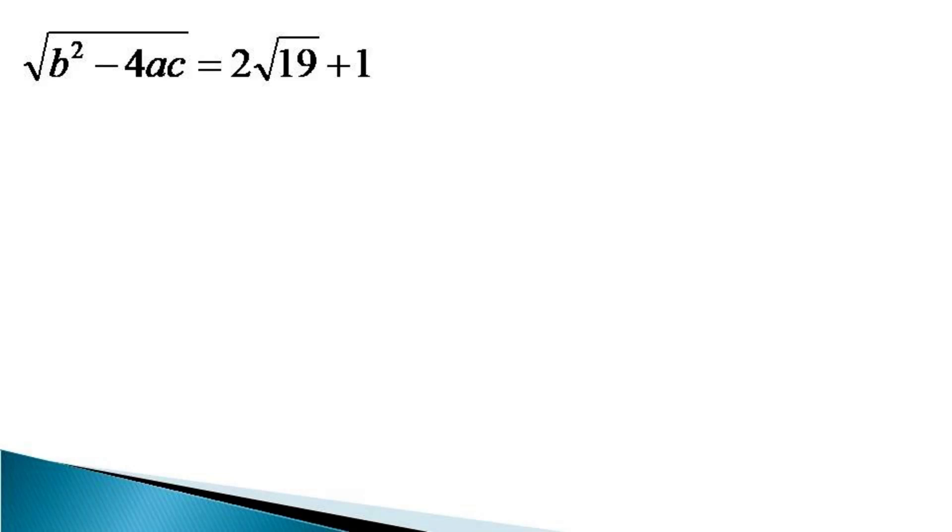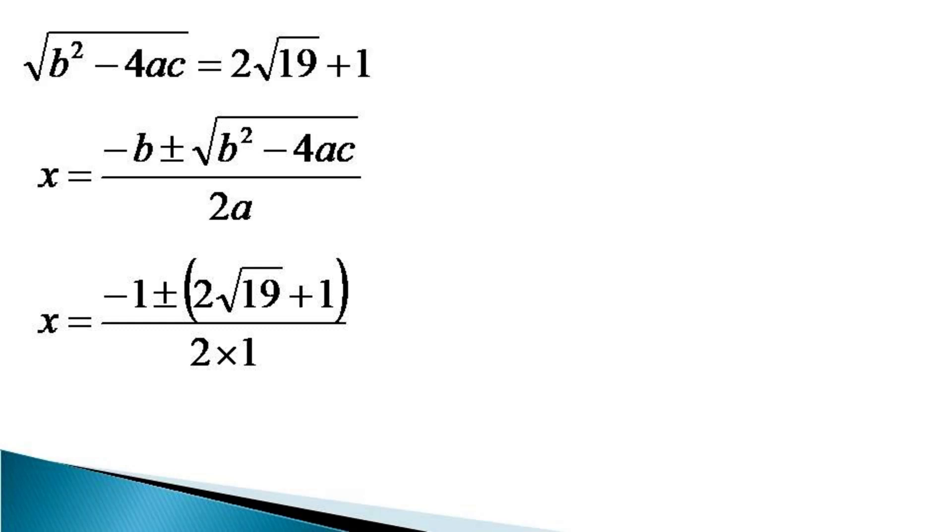Now we put this value and the other values of a and b in the quadratic formula. So x becomes equal to (-1 ± (2√19 + 1))/(2 × 1).